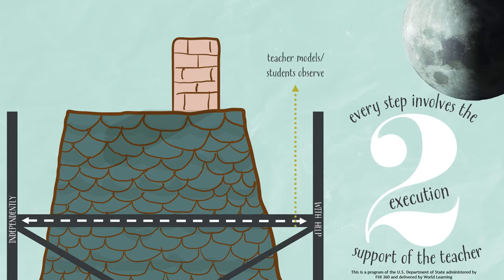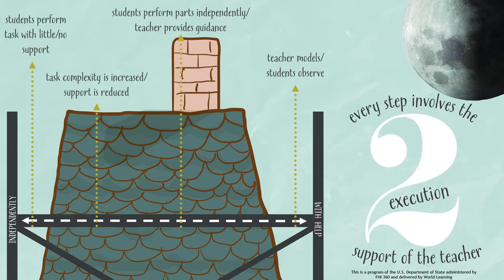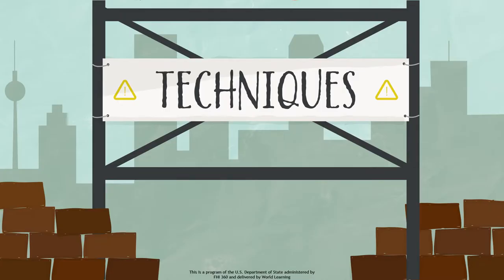The instruction begins with the teacher modeling the task and students observing it. Then it moves to guided practice, where students perform parts of the tasks independently and the teacher provides guidance. Gradually, as the students gain expertise, the complexity of the task is increased and the support is reduced. The process continues until the students perform the entire task with little or no support from the teacher.